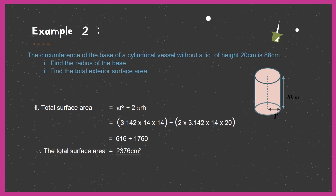Now we find the total exterior surface area. Since the cylinder has no lid, we do not multiply by 2 for two circles — it only has one circle. So we find πr² + 2πrh. Pi equals 3.142, r equals 14, so 14 multiplied by 14, plus 2πrh for the curved part. Adding these gives 2376 square centimetres. The total surface area of this cylinder without a lid is 2376 square centimetres.